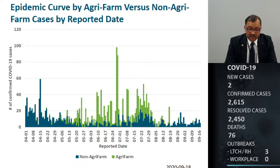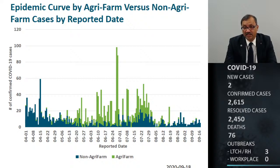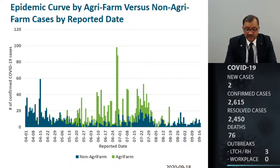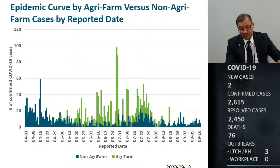Breaking it down further, we look at the agri-farm sector cases versus non-agri-farm cases, because a significant portion — almost close to 48% of our cases — were in the agri-farm sector. This graph is created to show the difference of where agri-farm sector cases came into play versus the rest of the community. More recently, cases in the agri-farm sector are very low and the majority of cases we are continuing to see are in the community.